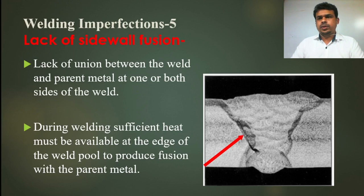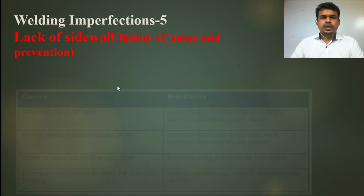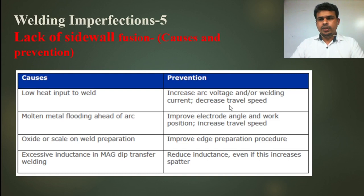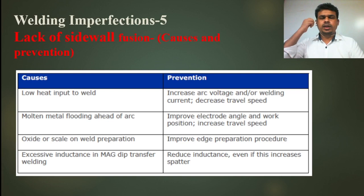To prevent this type of defect, we need sufficient heat during welding. Your current and voltage must be set properly. You need to follow the WPS at all times. The correct current and voltage settings will help you achieve proper melting. The cause is low heat input to the weld — you can prevent it by increasing voltage or welding current and decreasing travel speed. High travel speed can result in low heat input, which causes lack of sidewall fusion.